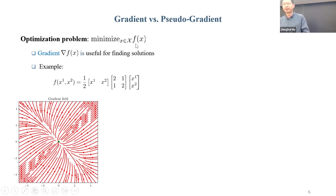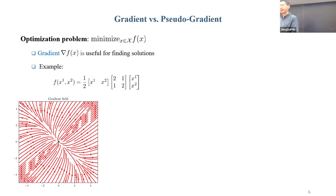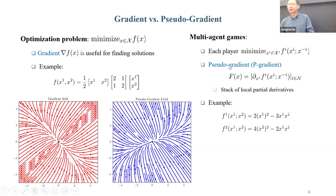Let's start on the familiar topic of optimization. Say my goal is to optimize an objective function with a feasibility constraint. If the objective function is differentiable, then its gradient is a useful operator because we can use it to define a solution and also in the solution algorithm — for example, a gradient descent algorithm. Here is an example of the gradient field for a simple objective function.